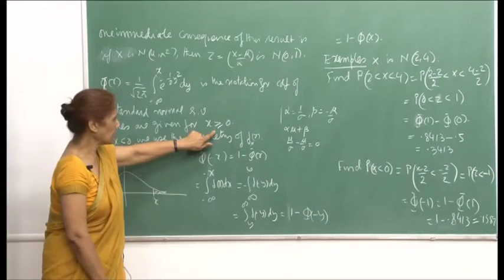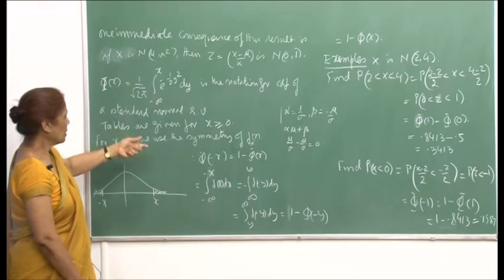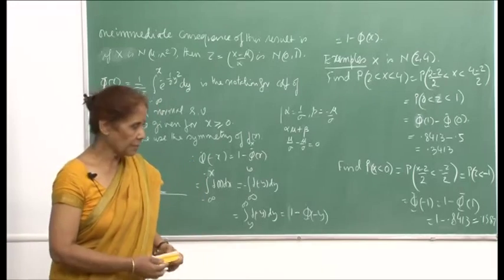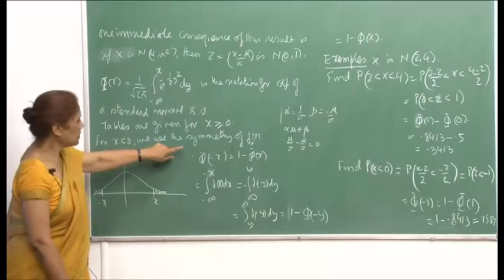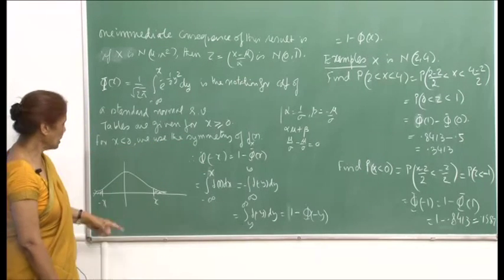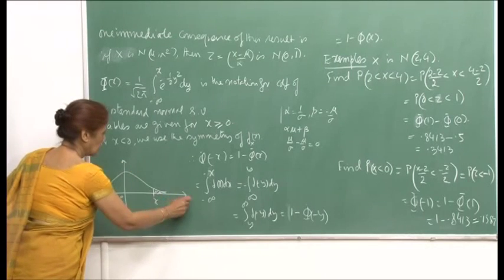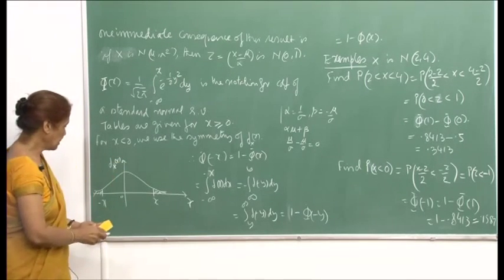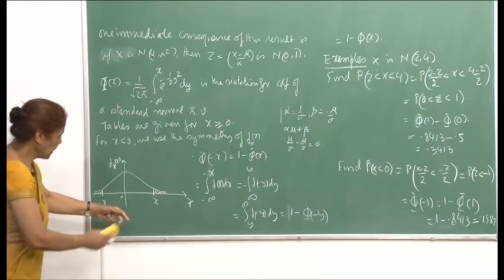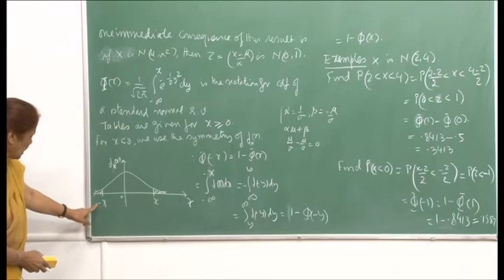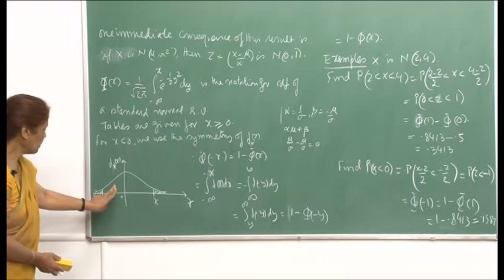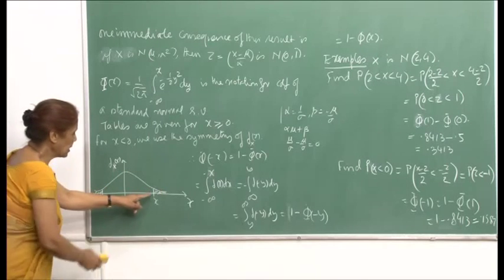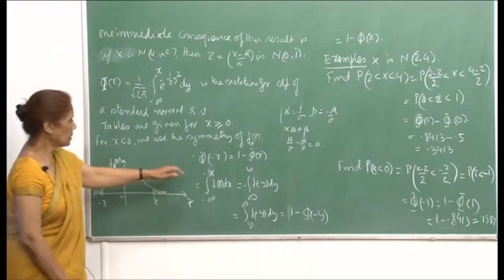The symmetry means that if you have x here, then the area to the right of x is the same as the area to the left of −x. Since this is half the area and this is 0.5, the shaded portion here is the same as the shaded portion there. So the formula is: Φ(−x) = 1 − Φ(x). If you have tabled values for x positive, then for x negative you can get them by this formula.